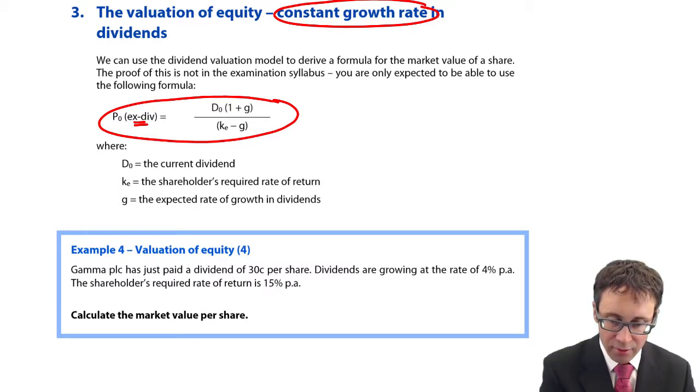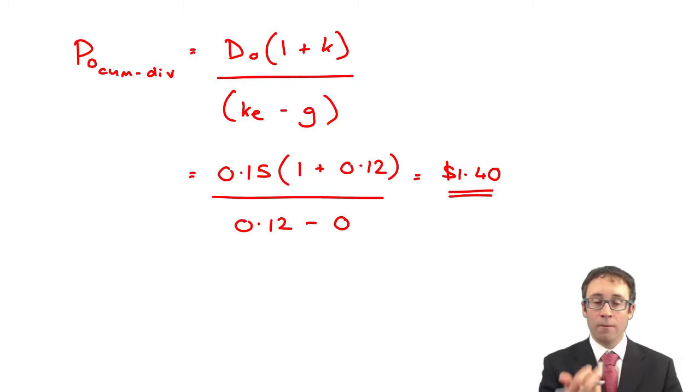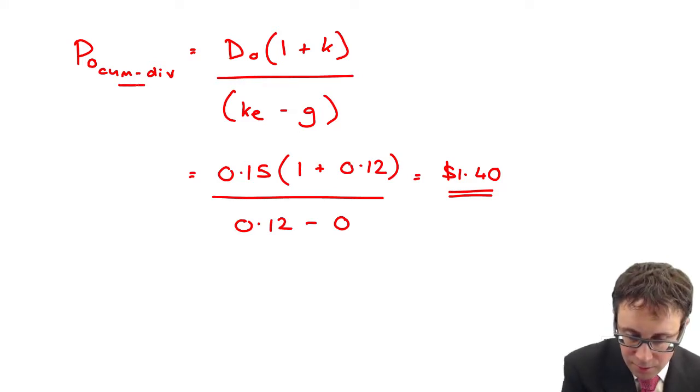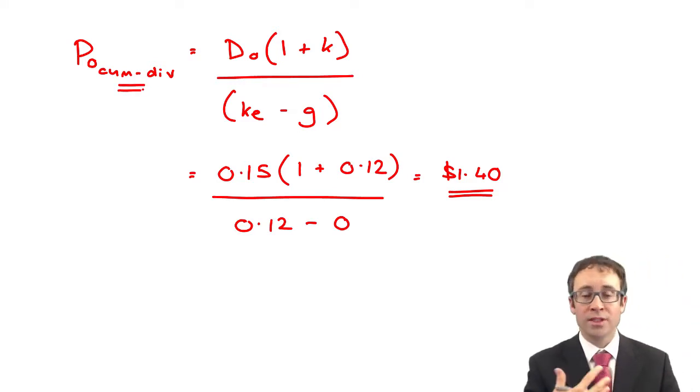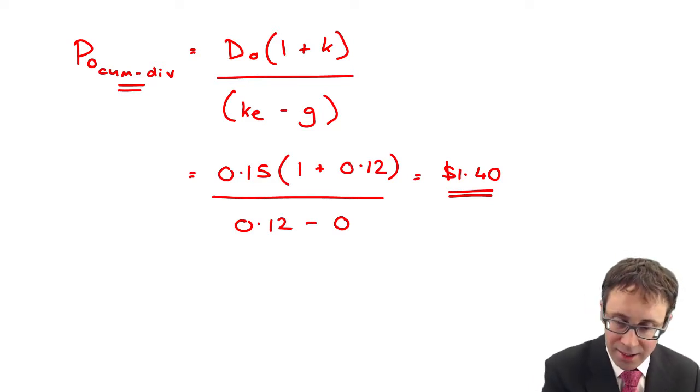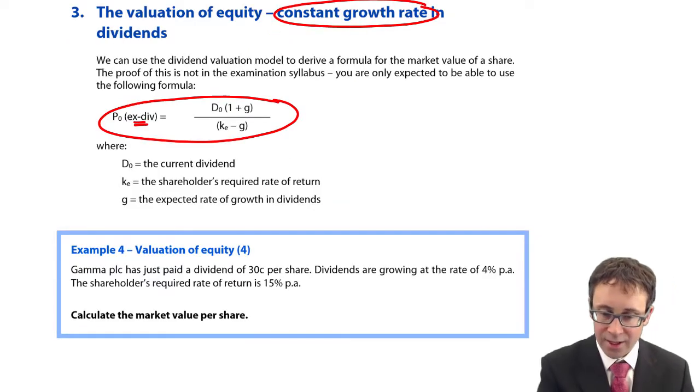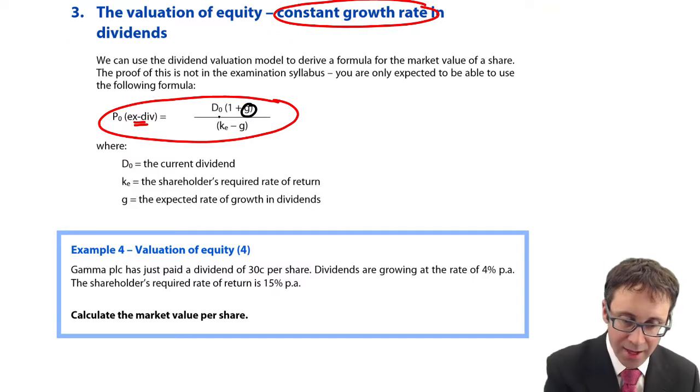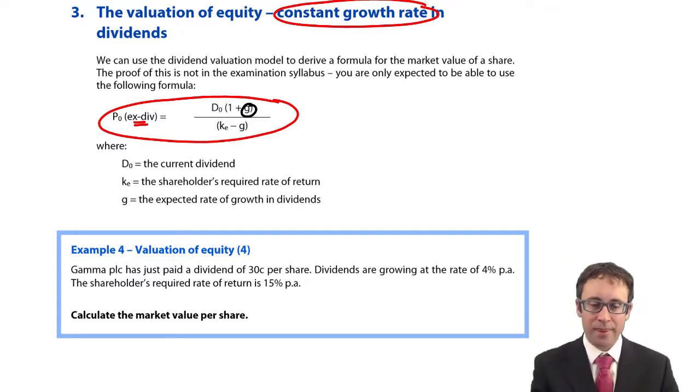Remember, in the last video, we said that the cum-div price is D0(1+k) divided by ke minus g. So the big difference there is the fact that for the cum-div, it's k, and for the ex-div, it's g. Happy with that? It's not too bad, is it?